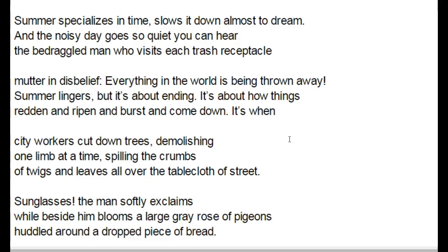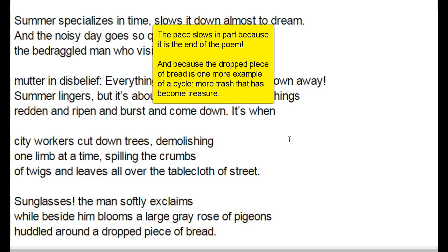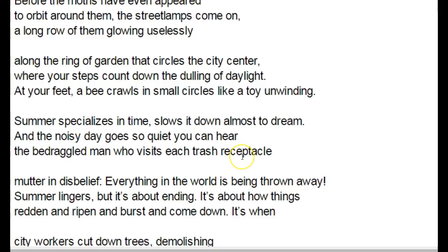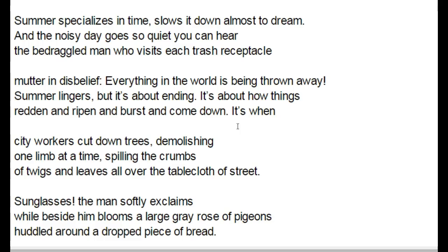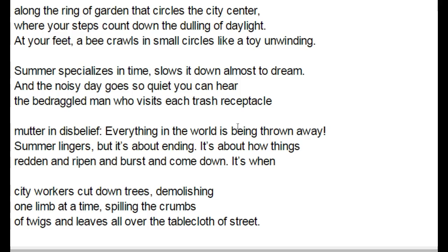Let's look at the last stanza and check pace. 'Sunglasses! the man softly exclaims, while beside him blooms a large gray rose of pigeons huddled around a dropped piece of bread.' Getting from 'dropped' to 'piece' slows us down. There's nothing that stops us in 'the large gray rose of pigeons,' but when we get to 'huddled around a dropped piece of bread,' we have to slow down and pause. So the sound here — not only the alliteration like 'small circles, circle city center, down dulling daylight' — those repetitions of consonant sounds mean something. But we should also get hints from the pace at which we are supposed to read, suggested by the words and sounds the poet has chosen.